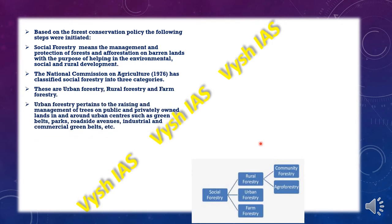In urban forestry, trees are planted and managed on public and privately owned lands in and around urban centers like cities and towns. These will be in the form of green belts, parks, roadside avenues, and industrial and commercial green belts.